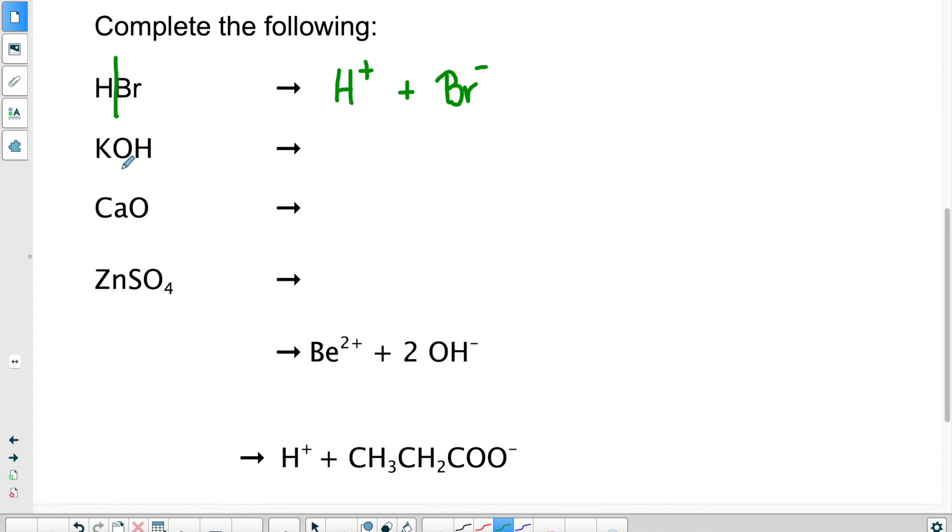Then we have KOH. So something that ends with OH is a base. So again, it will split between the cation and the hydroxide. So I know that a base always produces a hydroxide ion. And what am I left? If I take out the OH from the formula, I'm left with K, potassium. Potassium is in column number one. It will have a charge of plus one.